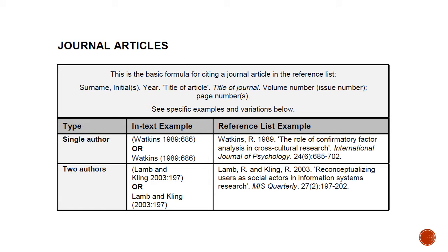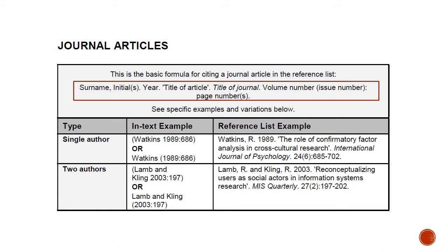Let's move on to referencing journal articles. Most of you are probably unfamiliar with journal articles as you are not expected to use them at school. However, journal articles are a big part of tertiary education. In Unit 4 of ACL, we will deal with reading journal articles in detail. You will find information about how to reference journal articles on page 28 of the Referencing Techniques Handbook. Like for books, there is a formula at the top of the section. We'll need the details of the author, the year, and the title of the article and journal. However, for a journal article, we're also going to need the volume number, the issue number, and the page numbers.